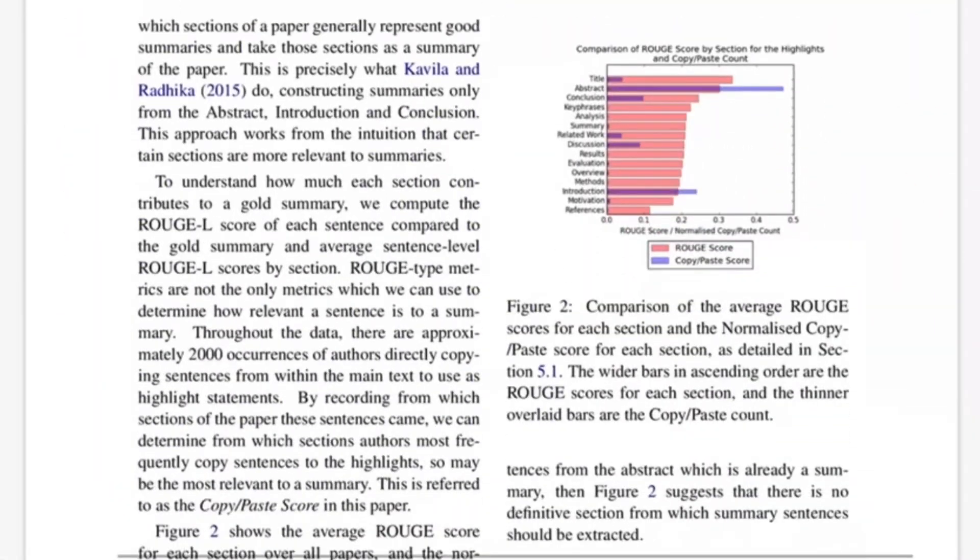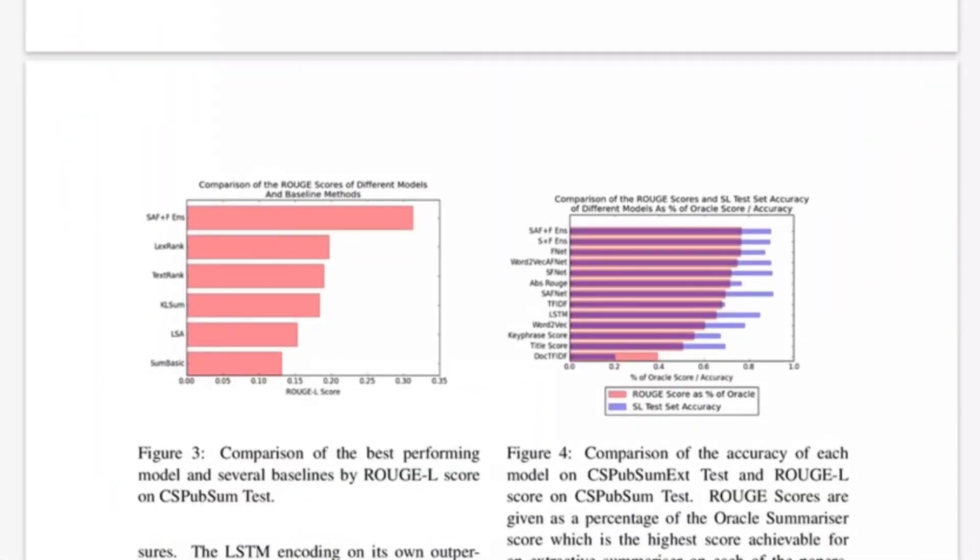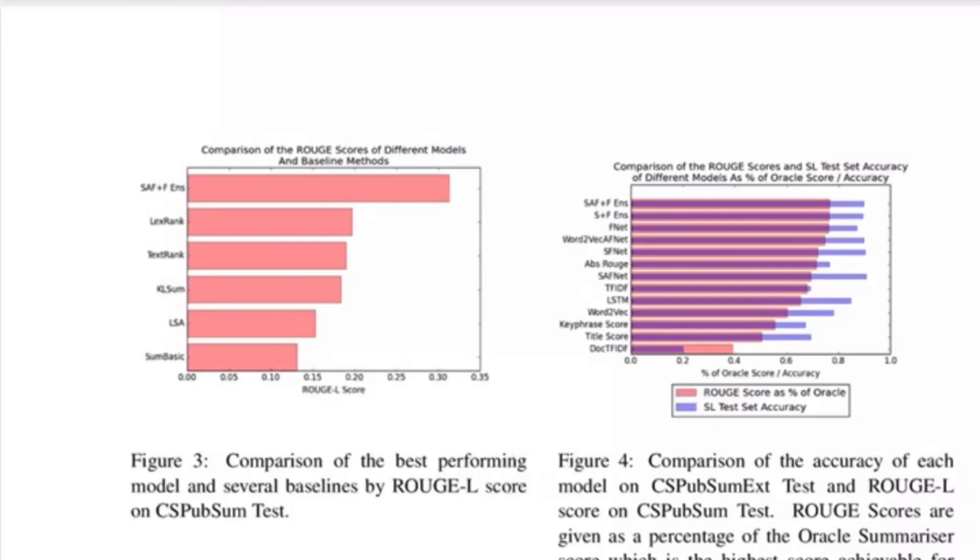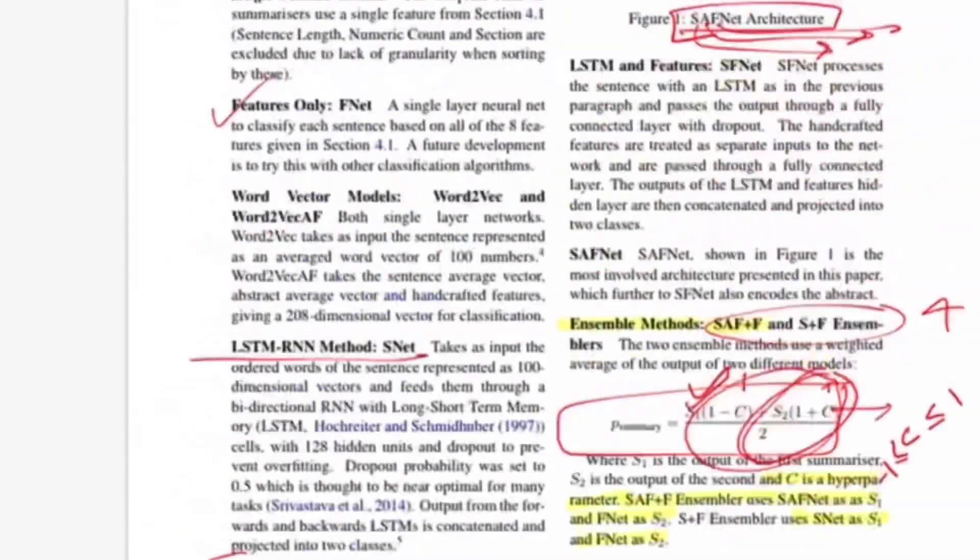I guess we are done with the paper now. This is the result they show. They evaluate on ROUGE-L metric only. These are all the previous works that have been done in this domain, and this is the ensemble they talk about. You can see with huge margin they were able to make the predictions correctly to whether a sentence should be part of extractive summary or not.